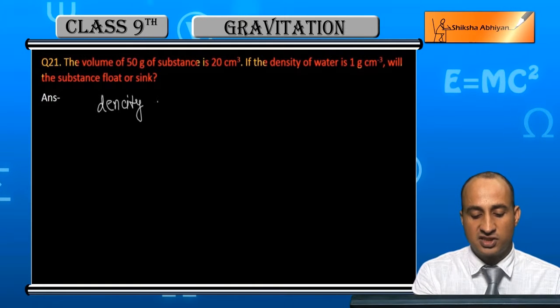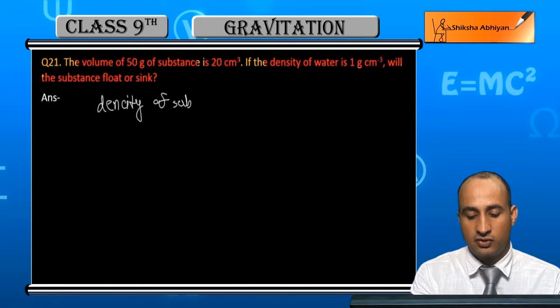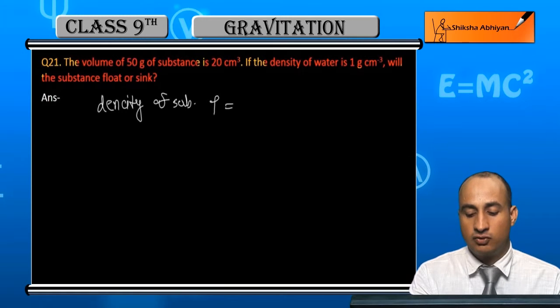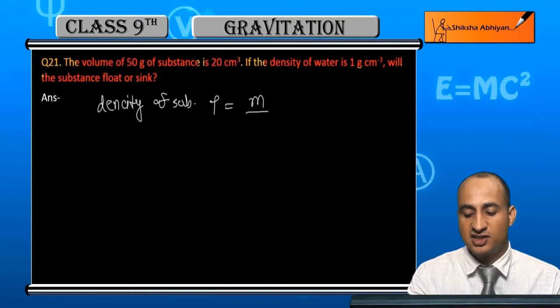Density of substance - what is it? It is equal to mass upon volume, mass upon volume.